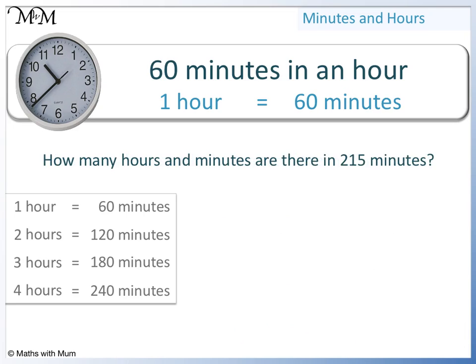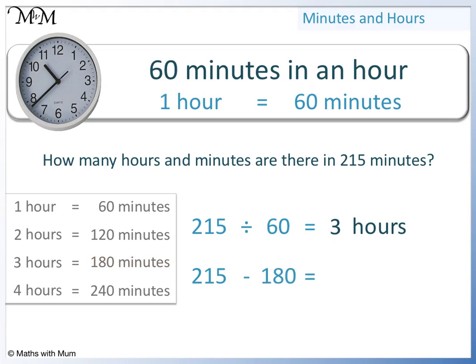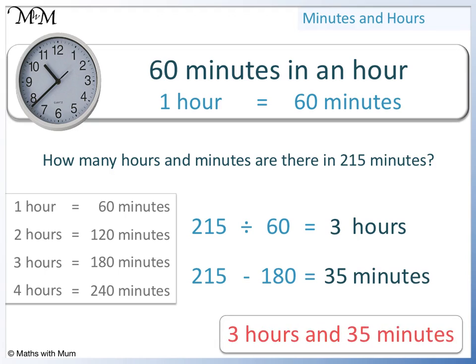How many hours and minutes are there in 215 minutes? 1 hour is 60 minutes, so we see how many times 60 goes into 215. 60 times 4 equals 240, which is too big. 60 times 3 equals 180, so 3 hours. To find the remainder, we subtract 3 hours, which is 180 minutes, from 215. 215 take away 180 equals 35, so 35 minutes. 215 minutes is the same as 3 hours and 35 minutes.